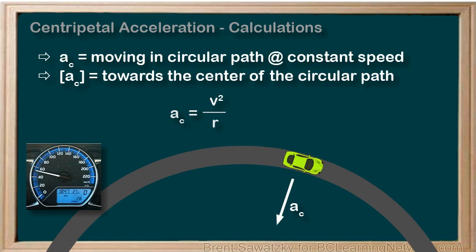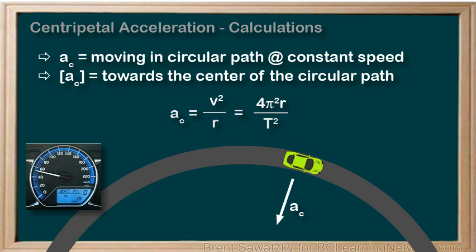What if, instead of knowing the linear speed of the object, you know more about the rotational speed? For example, what if you determine that the car takes 50 seconds to round the track? You can also use that information to determine the centripetal acceleration. In this case, the formula that would be easier to use would be AC equals 4 pi squared R over capital T squared. The capital T is the period — the time it takes the car to complete one rotation, so that would be 50 seconds in this case. Which equation you use simply depends on what information you've been given about the object's motion.